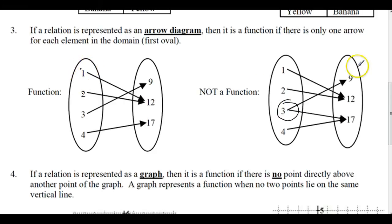as long as only one arrow comes off. This is not a function since 3 goes to 9 and to 17. So it's defined as not a function. So in an arrow diagram, you're just looking to see that there's only one arrow coming off of each one.